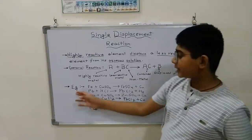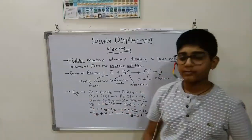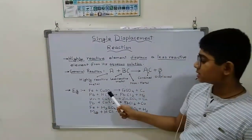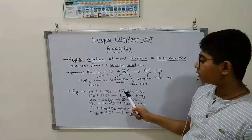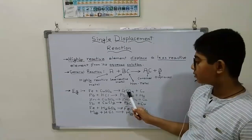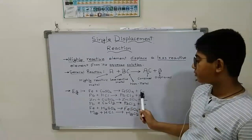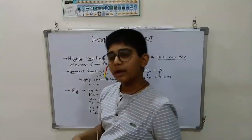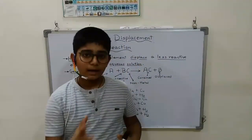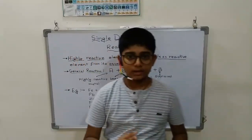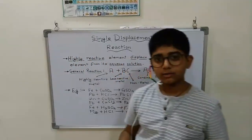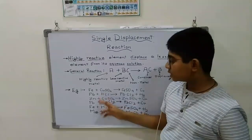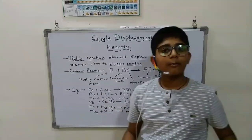Let's start with examples. Firstly, Fe plus CuSO4 gives FeSO4 plus Cu. Fe means iron, and Cu is copper.